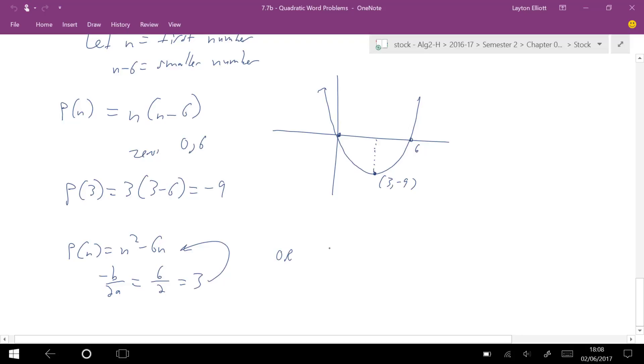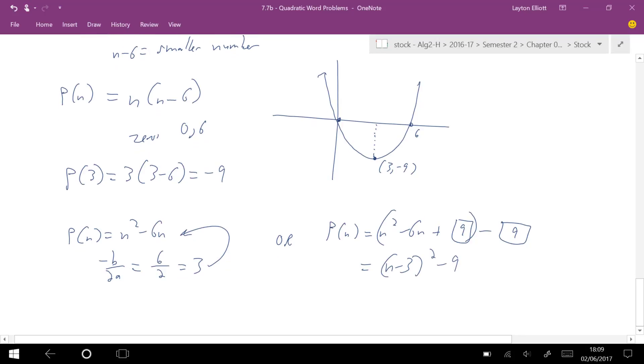Or, I could go p(n) equals n squared minus 6n plus a box, minus a box. We know it's going to be 9. 9 and 9, complete the square, and I get (n minus 3) squared minus 9, which means my vertex is at (3, negative 9). So, however we do it, we get that this vertex happens at (3, negative 9).